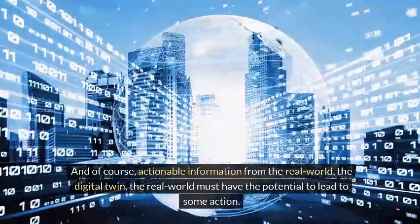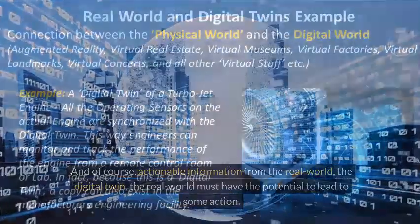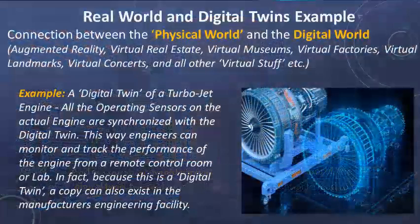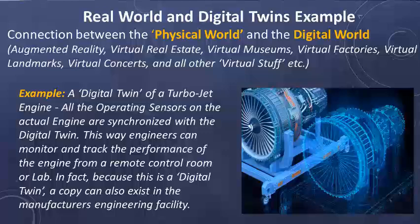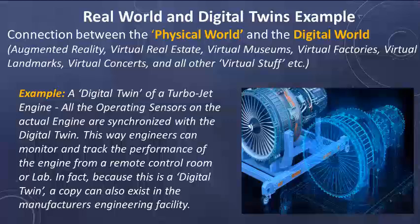Here are some real-world examples of digital twin usage in various industries. For example, the digital twin of a turbojet engine — all the operating sensors on the actual engine are synchronized with the digital twin counterpart. This way, engineers can monitor and track the performance of the engine from a remote control room or lab. Because this is a digital twin, a copy can also exist in a manufacturer's engineering facility and anywhere else desired. All the copies are exact replicas synchronized with the real asset.